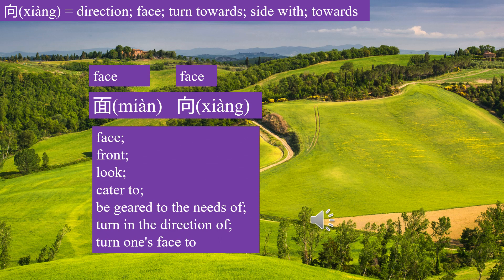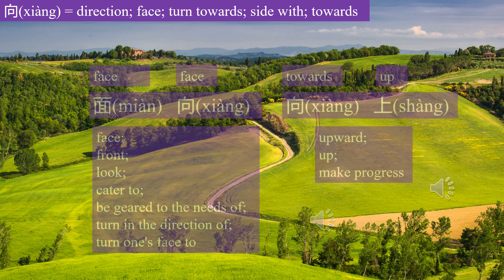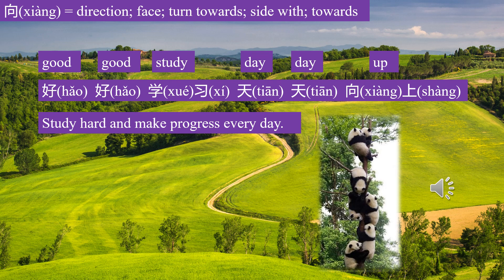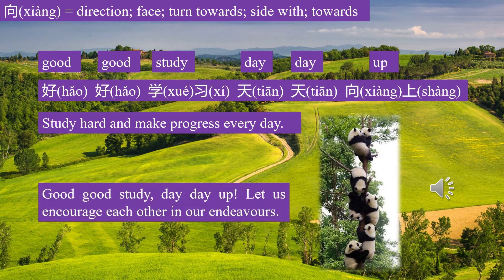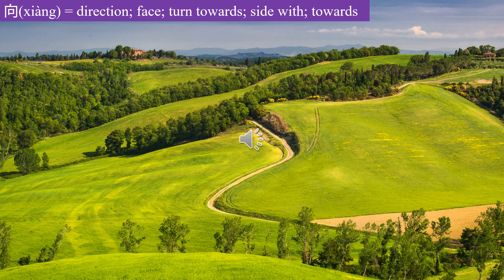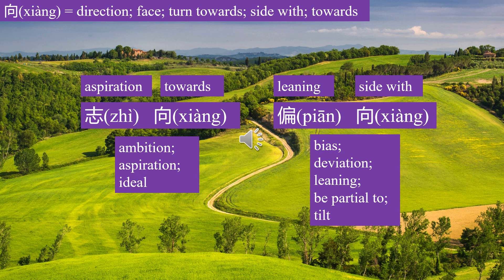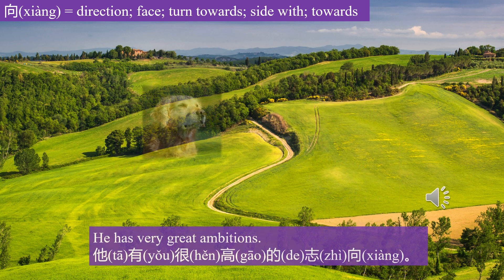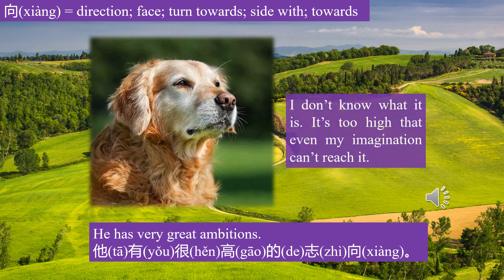面向 means face. 向上 means upward. 好好学习，天天向上 — study hard and make progress every day. Let us encourage each other in our endeavors. 志向 means ambition. 偏向 means bias. 她有很高的志向 — She has very great ambitions. It's so high that even my imagination can't reach it.